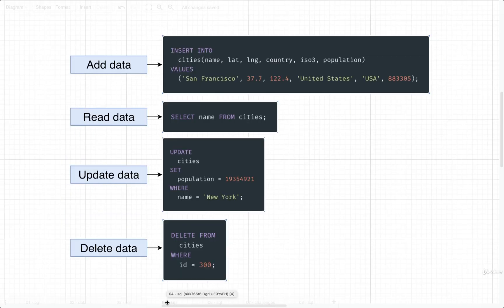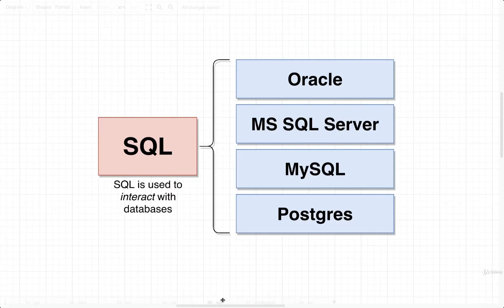In this diagram, there are a couple of examples of different SQL queries. We're going to eventually write SQL to add data, read data, update it, or delete it from our database. When we start to think about SQL, it is something that is very separate and very different than Postgres itself. SQL is a communication language — it is how we interface or interact with our database.